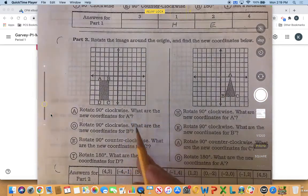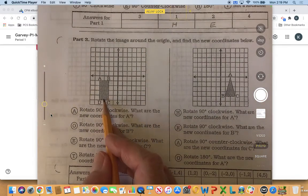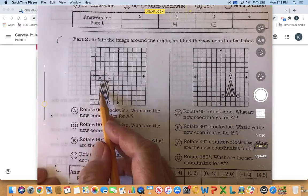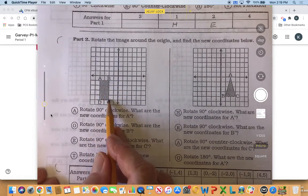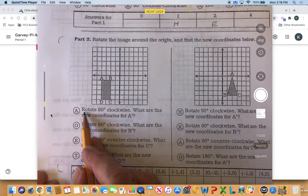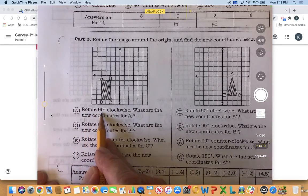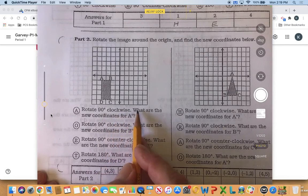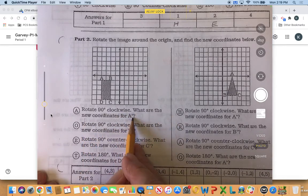All right, so it says here we've got the shape with vertices a, b, c, d, and it says rotate 90 degrees clockwise. What are the new coordinates for a prime?